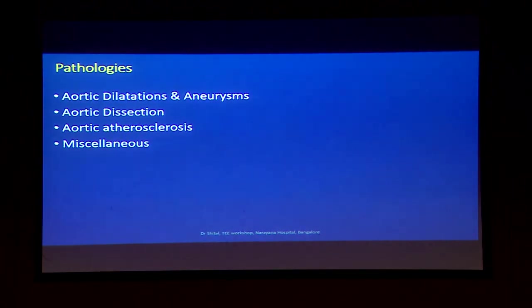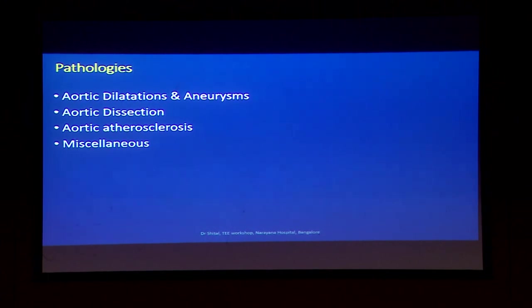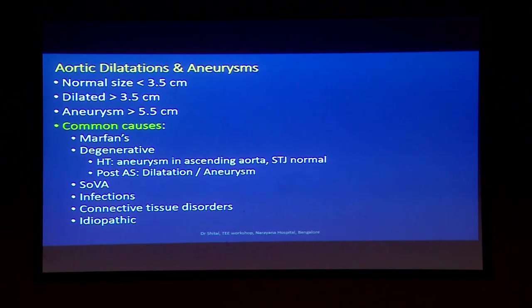For the aorta, the things we need to check are: dilatations, aneurysms, dissections, atherosclerosis, and some miscellaneous pathologies. Starting with aortic dilatations and aneurysms — of course it can affect any part of the aorta.